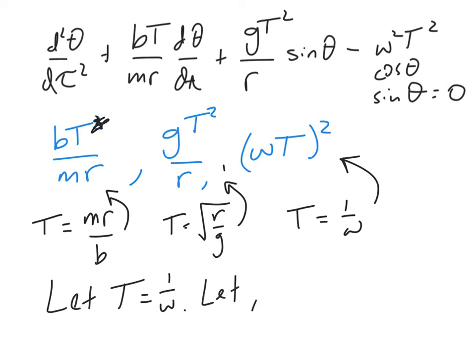Let beta equal b over mr omega. And let gamma equal g over r omega squared. And now I'm going to rewrite the equation using these new dimensionless groups.